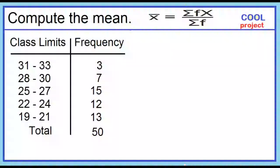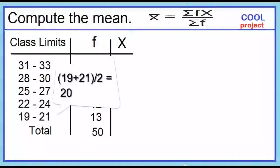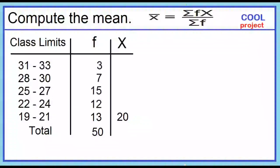To compute the mean, first find the class mark. Add a column for the class marks. To find the class mark, add the lower limit and the upper limit and divide the sum by 2. Starting from the lowest class interval: 19 plus 21 is 40, divided by 2 is 20. The class marks are 20, 23, 26, 29, and 32.